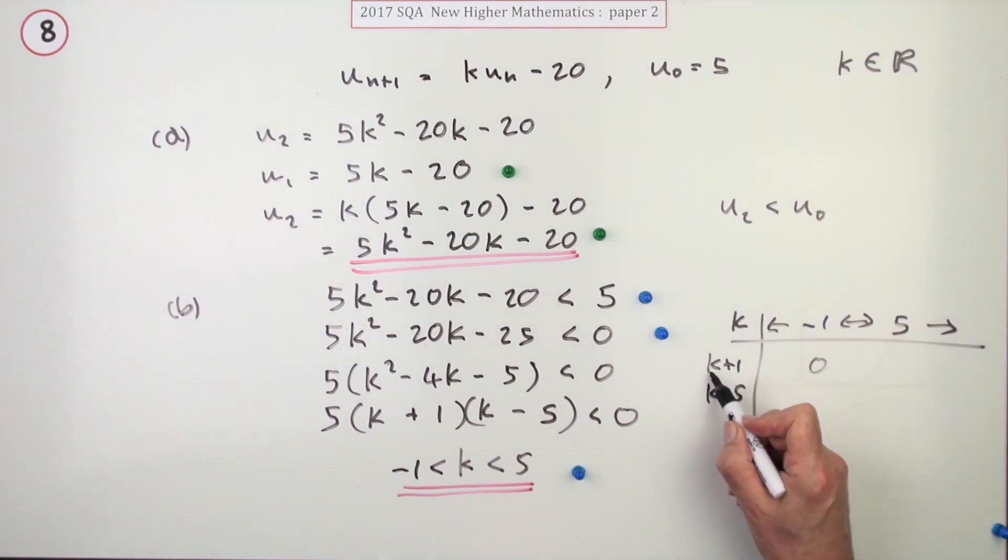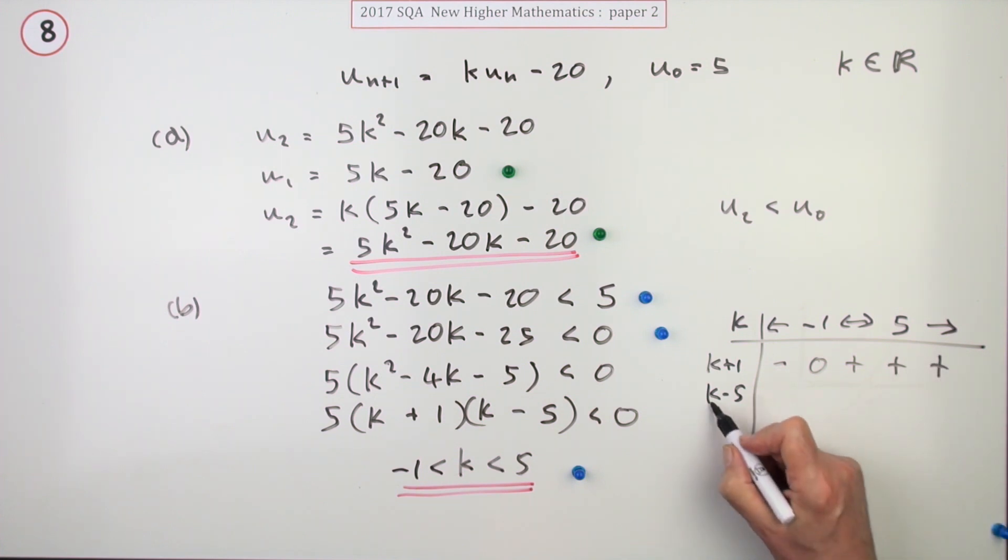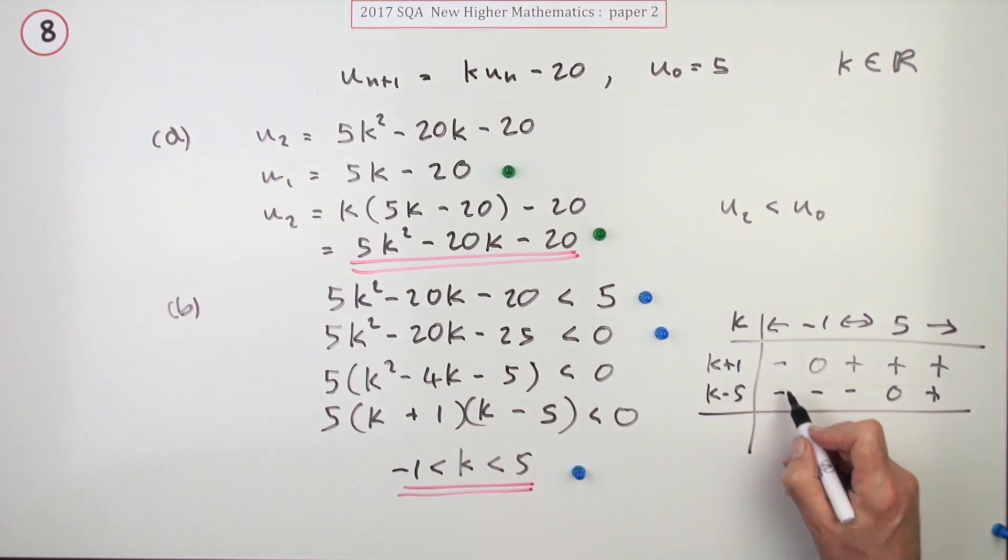k plus 1 is 0 when k is negative 1. If k is less than negative 1 it'll go negative. If k is more than negative 1 it'll go positive, so it'll be positive forever. k minus 5 will be 0 when k is 5. If k is less than 5 it'll be negative. If k is more than 5 it'll be positive. And the product of those two terms will be just multiplying those.